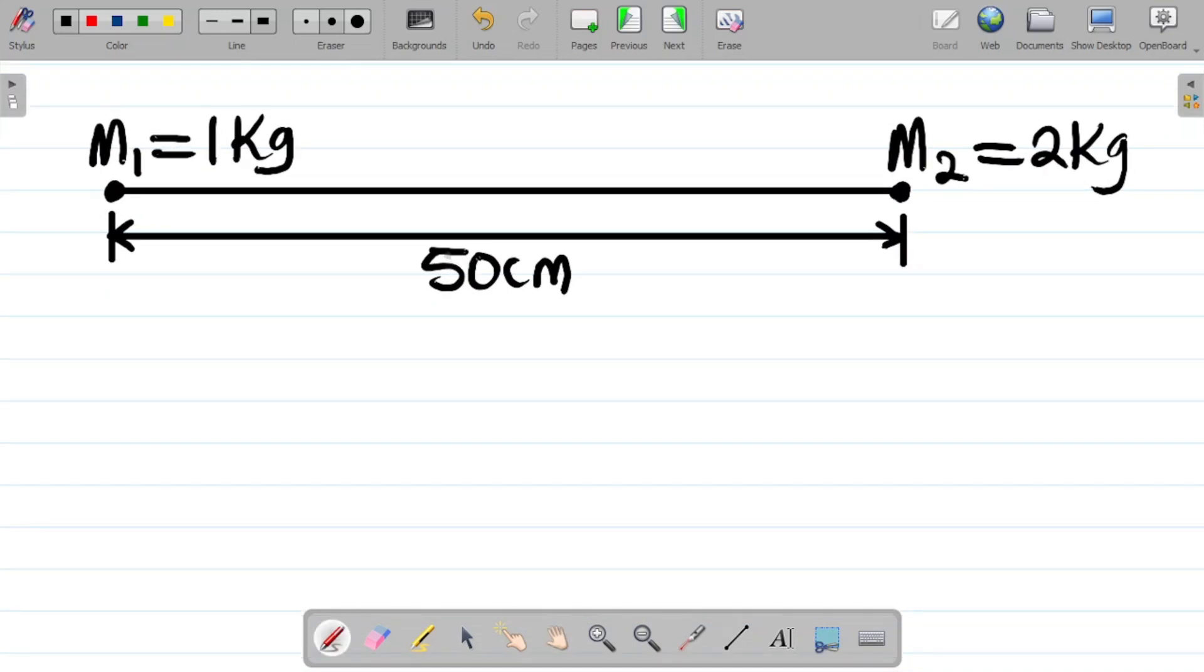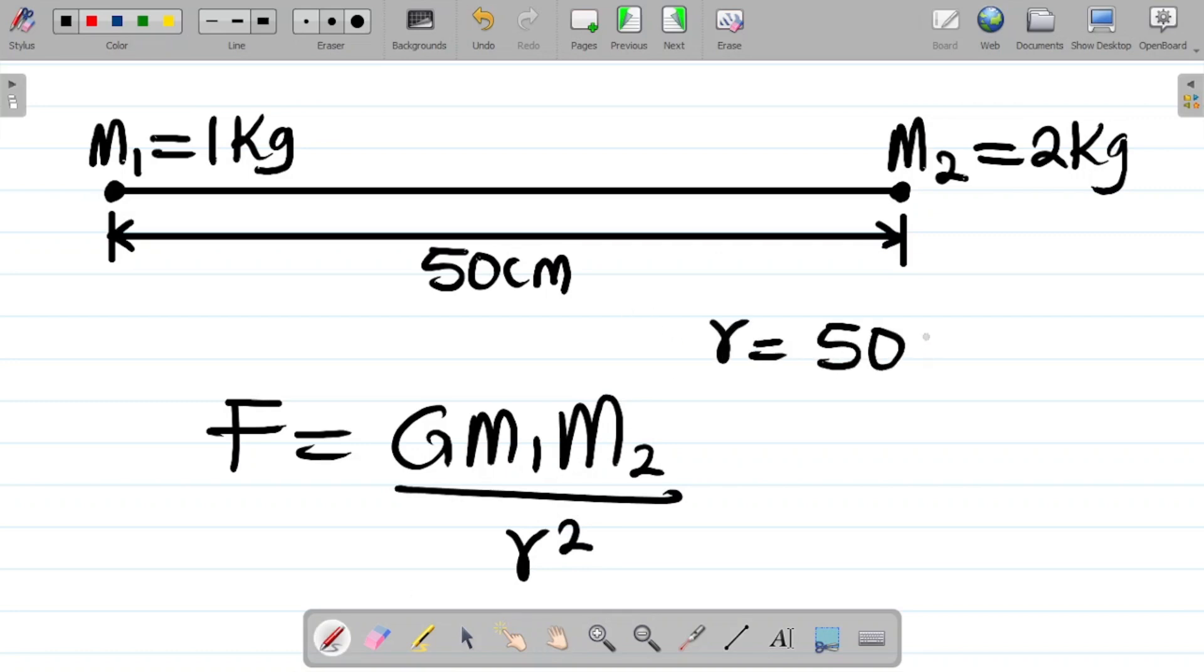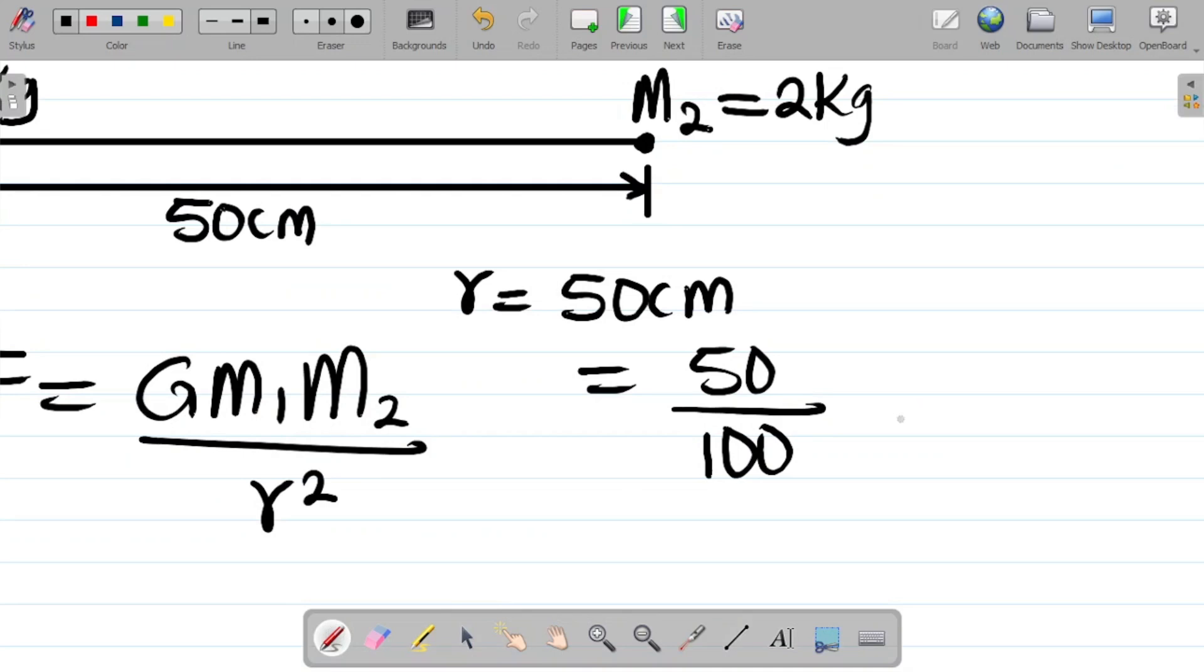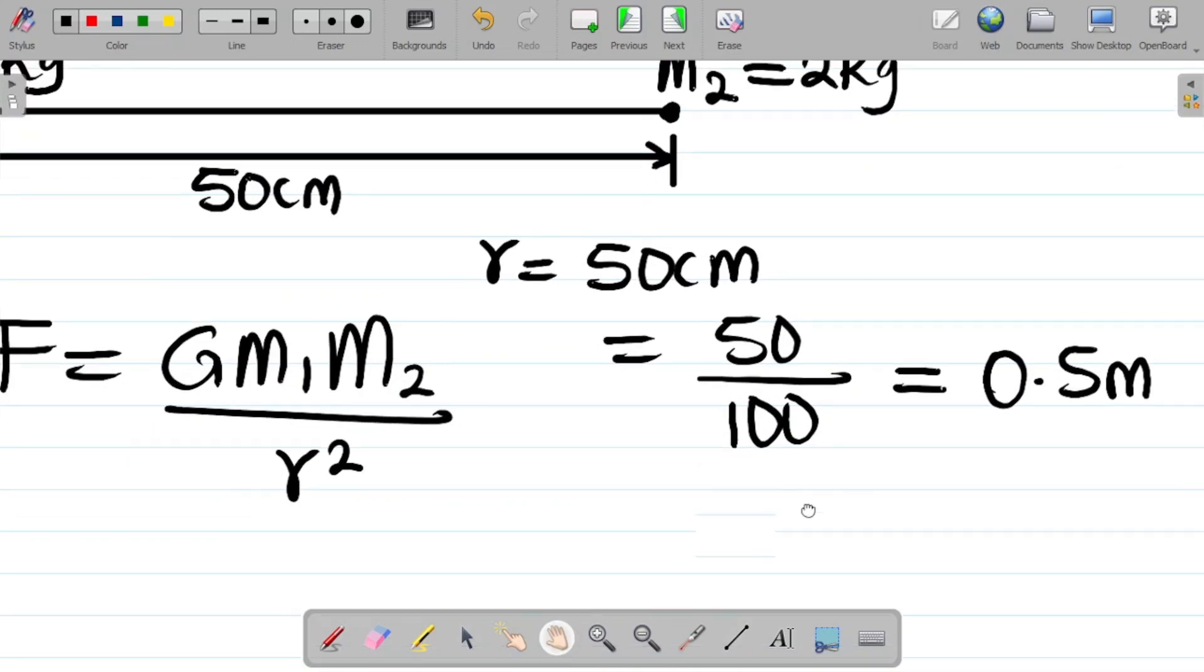We say that the force between them, that's M1 and M2, is directly proportional to the product of the masses and inversely proportional to the square of the distance apart. Mathematically, F would be equal to G M1 M2 all over R squared. Where R is simply the distance between them. In this case, R is equal to 50 cm. Convert this to meters, divide by 100. This will give you about 0.5 meters.